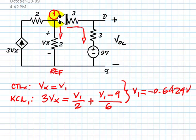and this current is the current in an RV branch: V1 minus 9 divided by 6, where V1 is negative 0.6429.